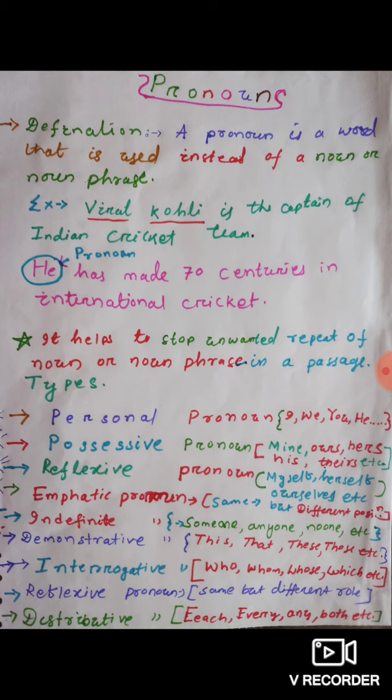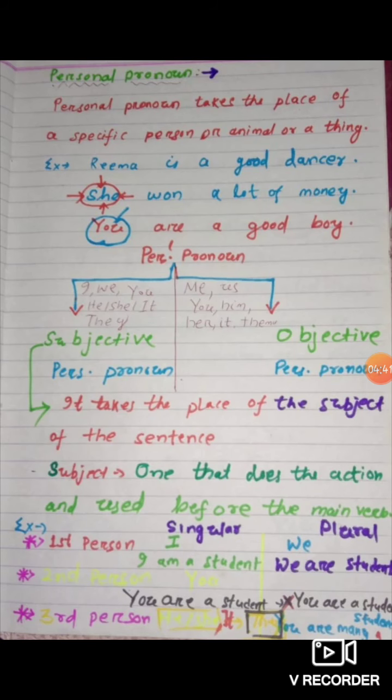Let's look at this table of personal pronouns and how it is used, and what is the role of personal pronouns in English grammar. As you see in the notes, the personal pronoun takes the place of a specific person, animal, or a thing. It may be the name of a person, an animal, or a thing.